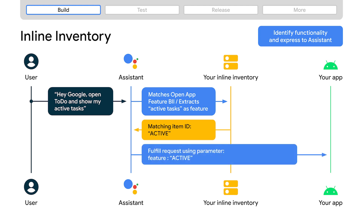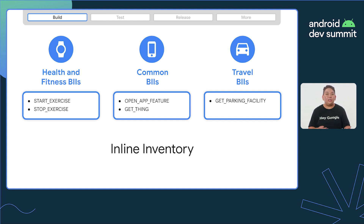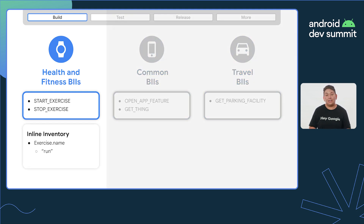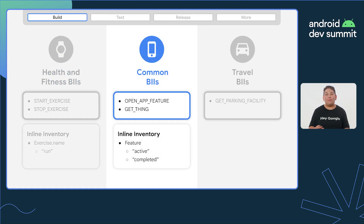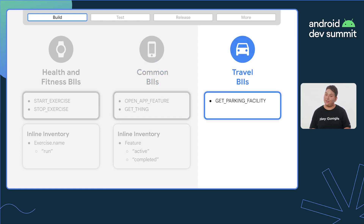Finally, your Android app is triggered with the open app feature BII capability, with the parameter feature value of active. Looking at our example apps, we can use inline inventory to clearly identify features for users. For wear apps, we'll have an inline inventory item of exercise name — in this example, run. For our mobile app, we'll have active and completed as our feature inventory items. While for auto apps, we don't need to use an inline inventory.